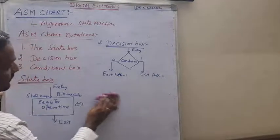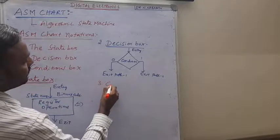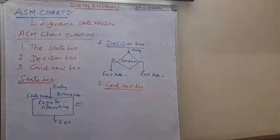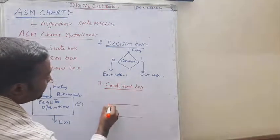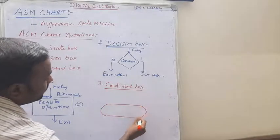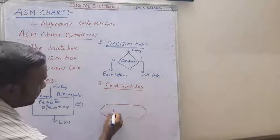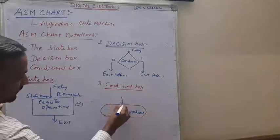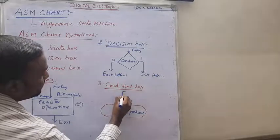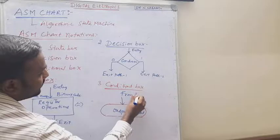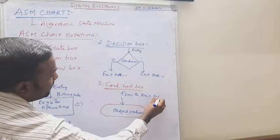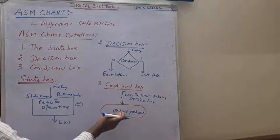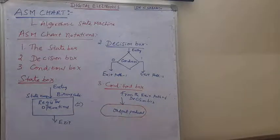The third notation is the conditional box. The conditional box is mainly used to describe the output of the given state diagram. Its entry comes from the exit path of the decision box. It connects the input from the exit path of the decision box to the conditional box.